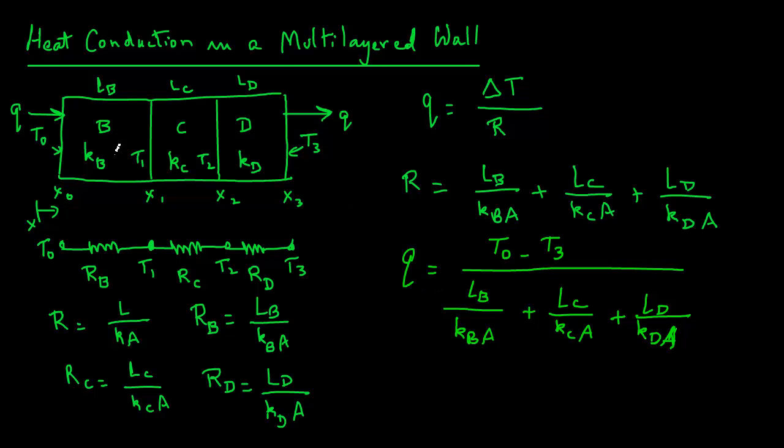Now, let's say that you were looking at only the first two layers. Then Q will be, so for the first two layers, the boundary values will be T0 minus T2 because those will be the two temperatures. But now we will use only the first two resistance terms. So it will be LB over KBA plus LC over KCA.